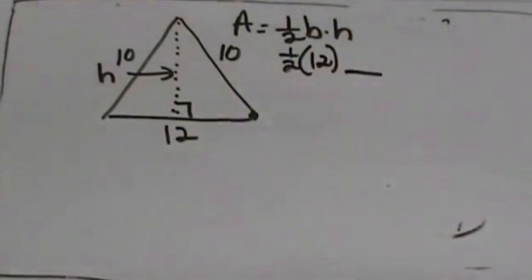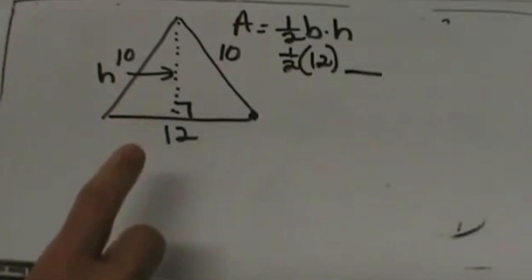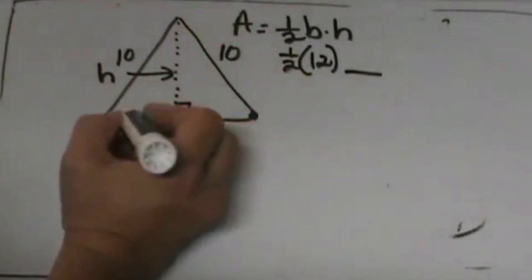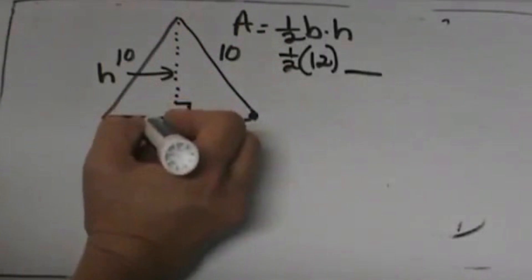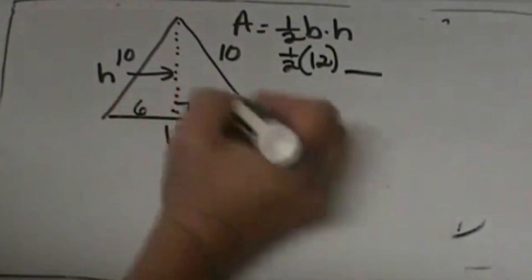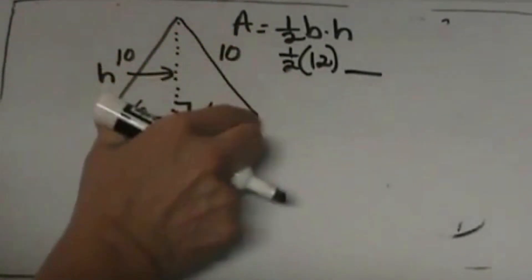We don't know our height right now but we do know something. We have an isosceles triangle and when we drop that altitude down it splits this 12 into two parts of 6. So that's 6 and that's 6 to make a base of 12.